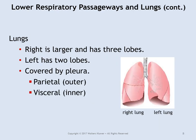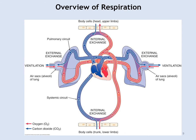The right lung is slightly larger and has three lobes. The left is smaller and only has two. The outside of the lung is covered by a protective sac called the pleura — there's outer or parietal and inner or visceral pleura.